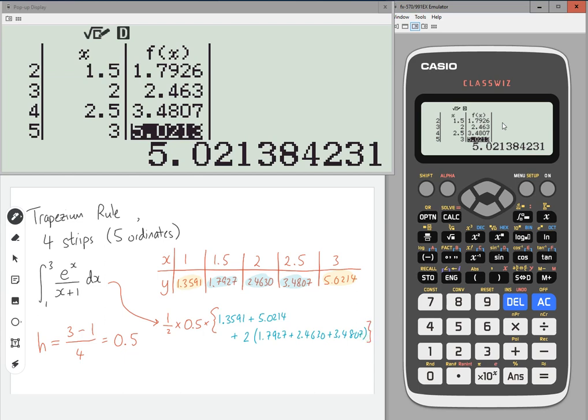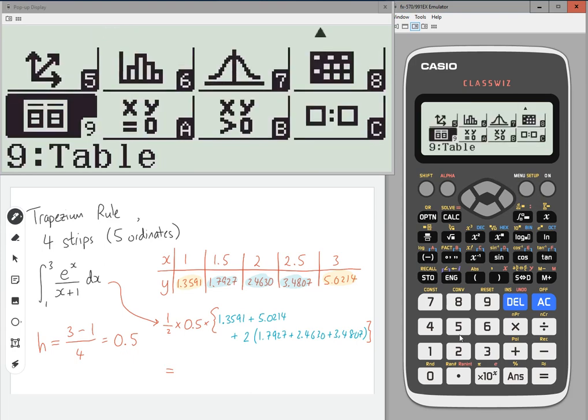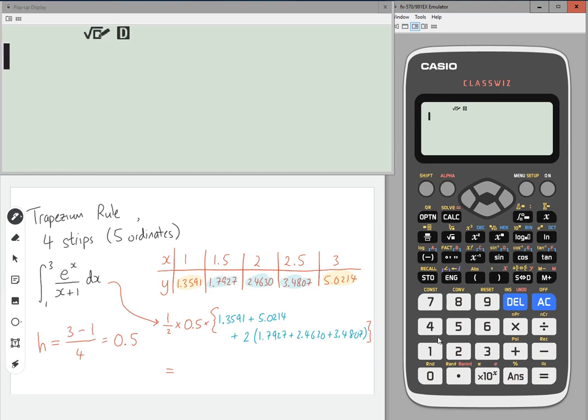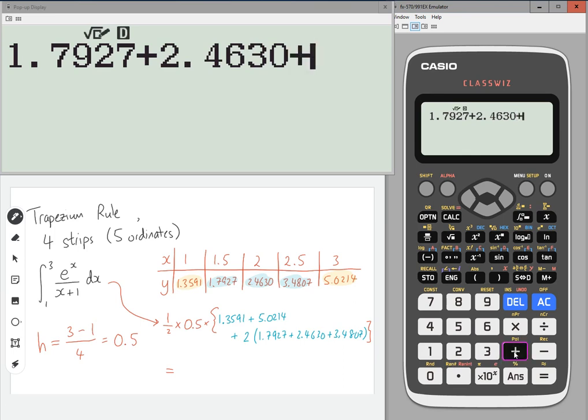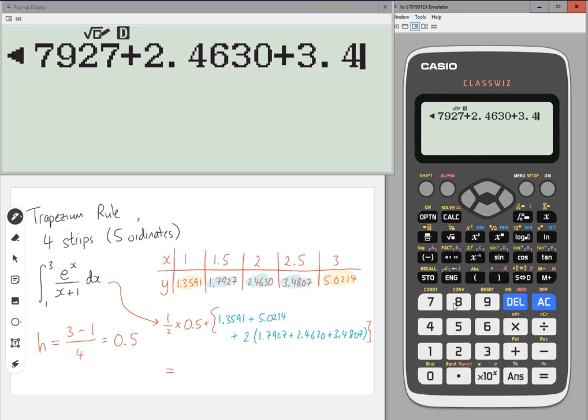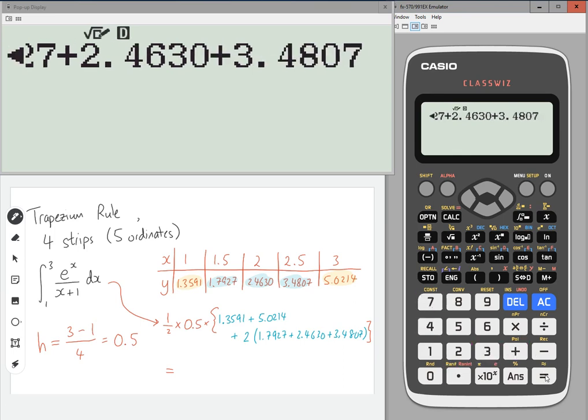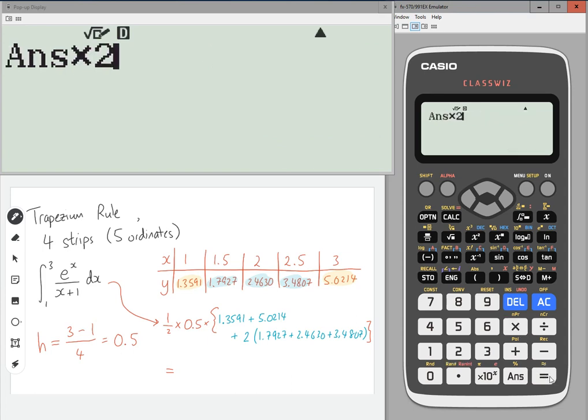When I type this into my calculator, I need to go to menu and then one to go back into the calculation. I'm going to start with the interior bracket, so 1.7927 plus 2.4630 plus 3.4807. That's the interior bracket. I'm multiplying that by 2, then I add on the 1.3591.